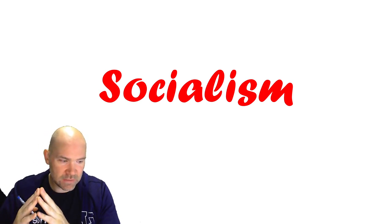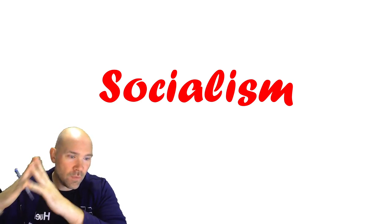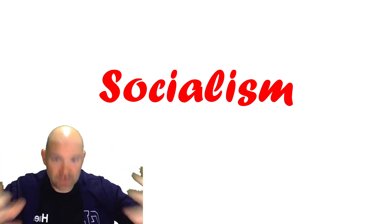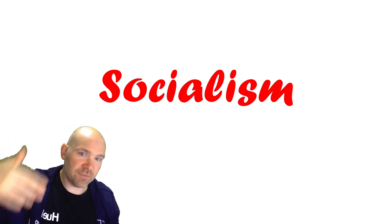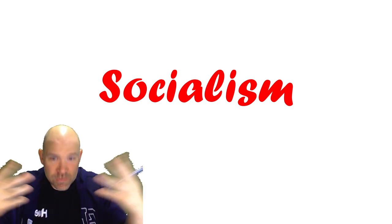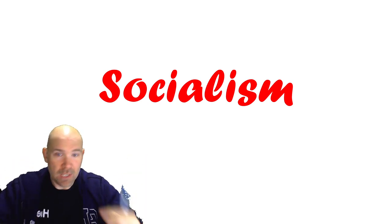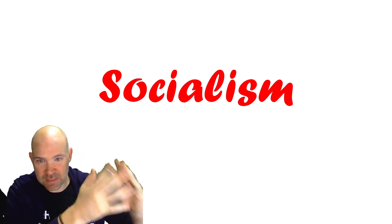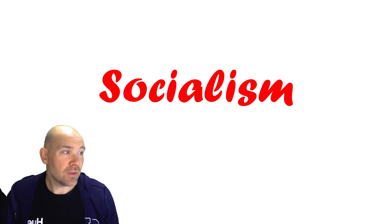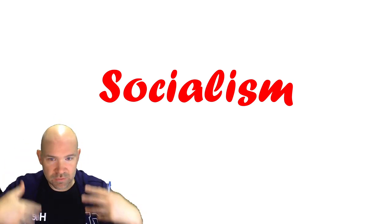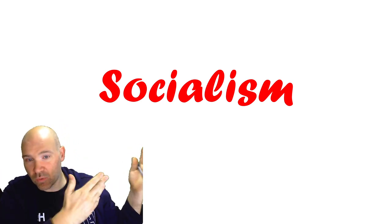When socialist writers look at the world, they see a world which should allow for freedom and happiness, because liberalism is a very optimistic ideology when it talks about individualism, rationality, and maximizing negative freedoms. Liberalism should lead to a happier world, but in the mid-to-late 1800s and early 1900s, liberalism is not leading to a happier world for the vast majority of people — it is leading to exploitation, sadness, and misery.